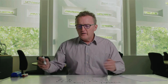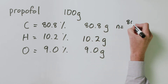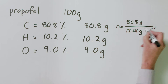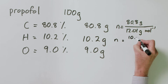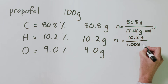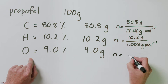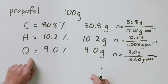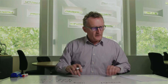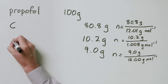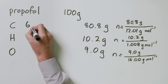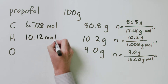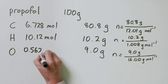So let's work out the number of moles of each element in that 100 gram sample. The number of moles of carbon is 80.8 grams divided by 12.01 g/mol. The number of moles of hydrogen is 10.2 grams divided by 1.008 g/mol. And the number of moles of oxygen is 9.0 grams divided by 16.00 g/mol. These calculations give us: carbon = 6.728 mol, hydrogen = 10.12 mol, and oxygen = 0.5625 mol.